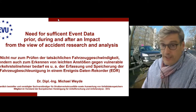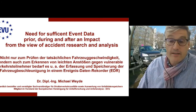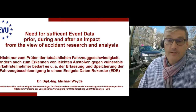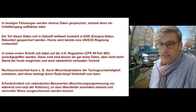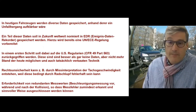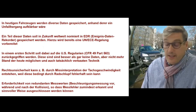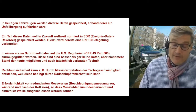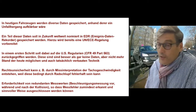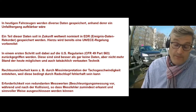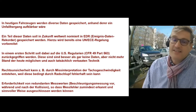Why? Because the US regulation — the so-called Code of Federal Regulations 49 Part 563 — provides no data when a vulnerable road user is involved. The US regulation says you only have data either if a restraint system has been deployed, such as an airbag or a belt pretensioner, or if the delta V — the change of velocity during the impact — is higher than 8 kph within a time increment of 150 milliseconds. And this is what usually does not happen in VRU collisions.